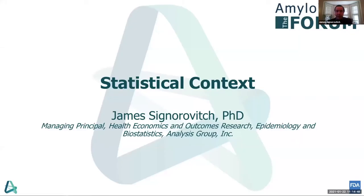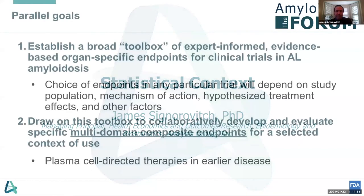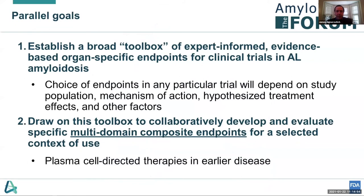But we think it's essential to explore the possibility of composites in AL amyloidosis, particularly for trials of plasma cell-directed therapies. Precisely because AL is a heterogeneous and multi-system disease, a multi-system endpoint might better measure the effects of a treatment that truly targets the root causes of the disease. And because AL is rare and progressive, the better our measure of treatment efficacy, the better we could evaluate new drugs rigorously and with achievable sample sizes, while limiting the amount of progression and mortality that has to occur during clinical trials.